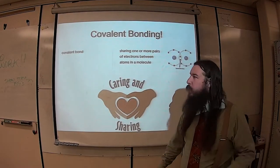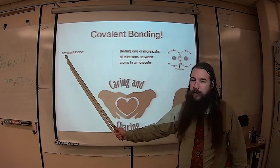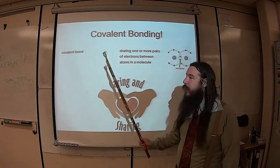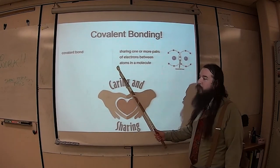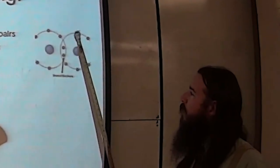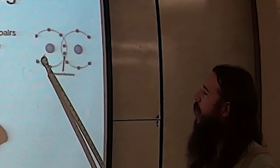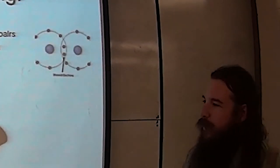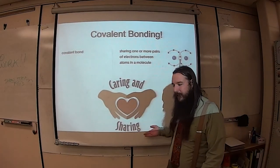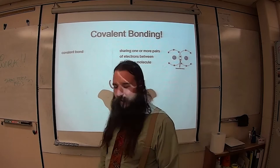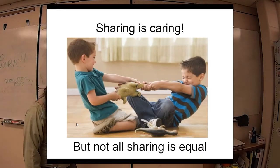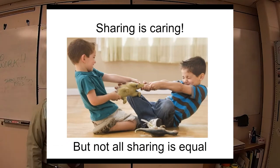Remember in covalent bonding, that is when we are sharing one or more pairs of electrons between atoms in a molecule. So if over here is my friend and yours, a molecule, notice we have two atoms and right there we are sharing these electrons. Also good to remember that sharing is caring. But like the picture says, not all sharing is equal.